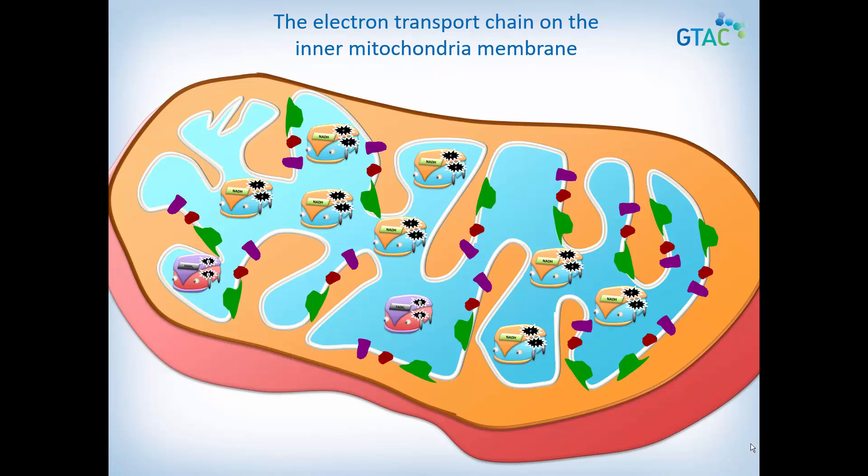In glycolysis and the Krebs cycle, you will recall that 12 electron shuttles were produced: 10 NADH and 2 FADH2. We are about to find out why these loaded electron shuttles are so important.